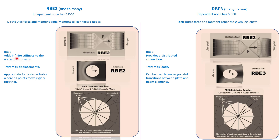RPE 2 adds infinite stiffness to the nodes it constrains and transmits displacements equally. It is appropriate for fastener holes and similar connection points where parts move rigidly together. If you think about it simply — for a hole where a shaft is going to move — RPE 2 makes sense. If you want a clear understanding, run the analysis with both and decide what is best for your situation.